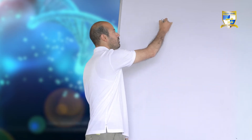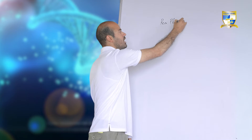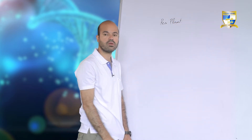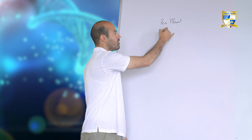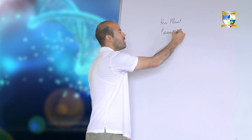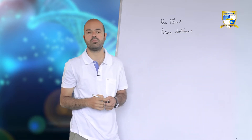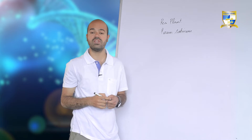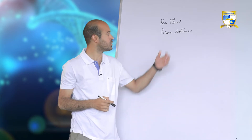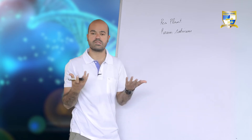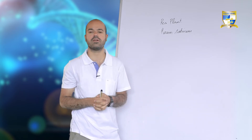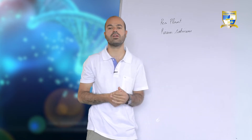Mendel performed breeding experiments for about 10 years. In these breeding experiments he chose the plant called pea plant. In common language it's called pea plant and its scientific name is Pisum sativum. Now, why did Mendel choose the pea plant as his experimental plant? What were the features that made Mendel choose Pisum sativum as his experimental plant?